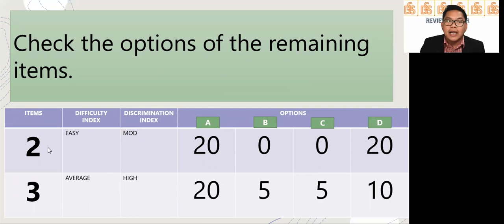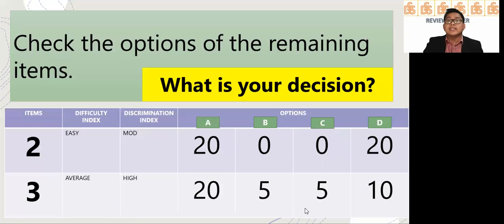In that case, items 2 and 3, A, B, C, D. For item number 2, 20 students selected option A, 20 students selected option D, but none for B and C. Number 3, 20 selected A, 5 for B, 5 for C, and 10 for D. The question is, what is your decision?